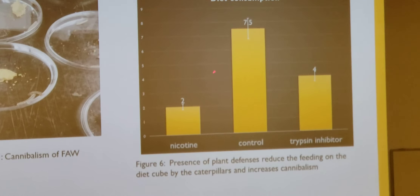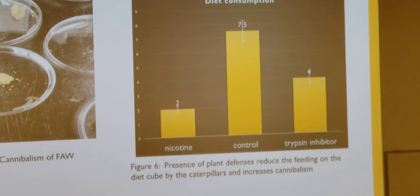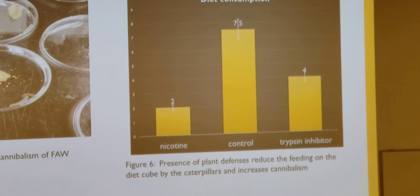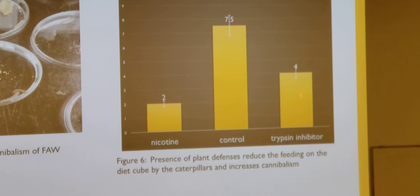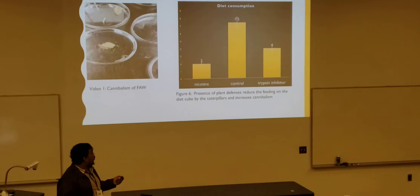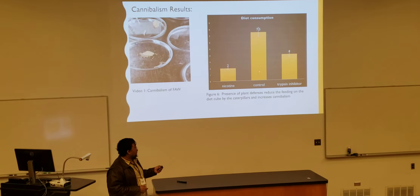On the other side, this shows diet consumption with the toxin and without the toxin — just looking at the artificial diet. The control group has almost four times the diet consumption compared to the toxin group. So when they are eating each other, they are not eating the diet. On the other hand, the trypsin inhibitor group shows double that of nicotine but half that of the control, which gives us some idea of what level of cannibalism we would expect — highest in nicotine, lowest in control, medium in trypsin inhibitor.